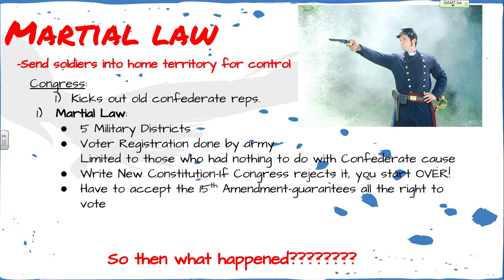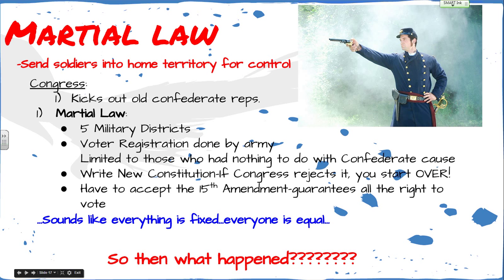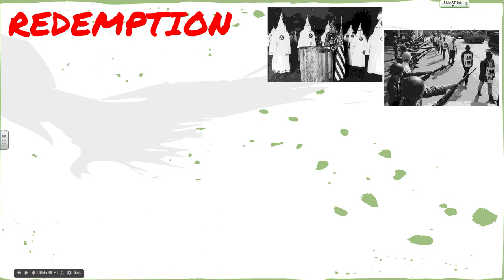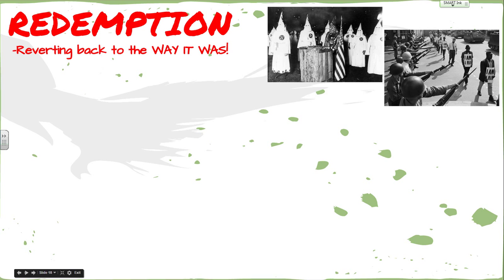So if Congress was this tough giving African Americans freedom and cracking down on the South, why was Martin Luther King giving his 'I Have a Dream' speech in the 1950s? Something had to change. The second phase is called Redemption — make sure you know this word — where the South basically goes back to their old ways. The first few years we tried to enforce things, but people got tired of it.